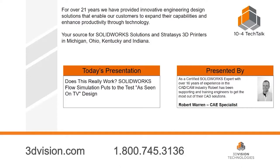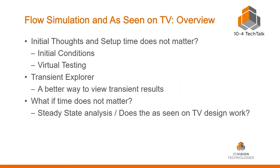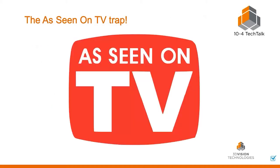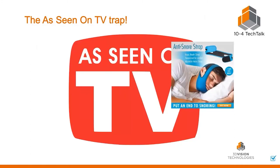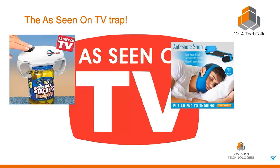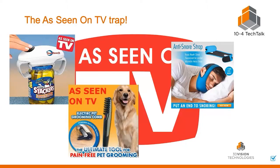This morning we're going to be looking at a pretty unique application for flow analysis. We're going to be looking at an as-seen-on-TV model. I came across this one night and I want to look at the initial thoughts, some setup on that, use of the Transient Explorer with regards to flow, and then maybe run through a steady state analysis. I'm like many people and usually get sucked into that as-seen-on-TV trap.